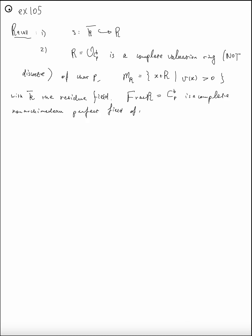I'm going to check characteristic p. It's perfect here — I mean the Frobenius is an isomorphism. Let's do the exercise today. Firstly, let's prove a lemma to prepare for our second exercise.